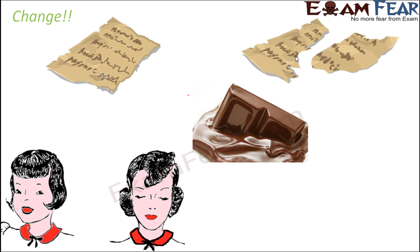Think of a chocolate. As long as you keep it inside the refrigerator it is quite solid and proper. Now if you keep it outside for quite some time, the chocolate starts to melt. So if you keep it in the sun or under high temperature, it starts melting. Do you think that a change has taken place? Yes, because now the molten chocolate looks quite different from the solid chocolate. So we see that there is a change.